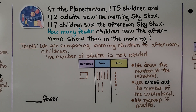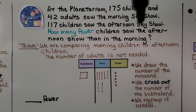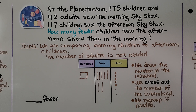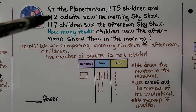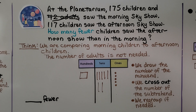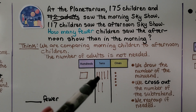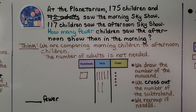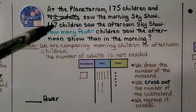This problem says at the planetarium, 175 children and 42 adults saw the morning sky show, and 117 children saw the afternoon sky show. How many fewer children saw the afternoon show than the morning? We're comparing morning children to afternoon children. The number of adults — 42 — is not needed. It's unnecessary information we can ignore. We start with the greater number, 175. We draw 1 hundred, 7 tens, 5 ones. That's the minuend. We're going to cross off the subtrahend. We need to take away 7 ones, but we only have 5.